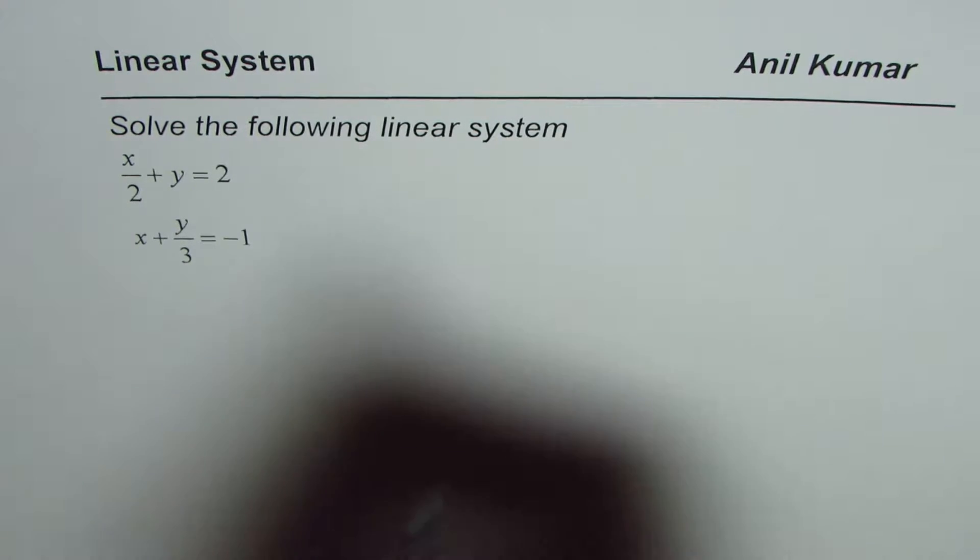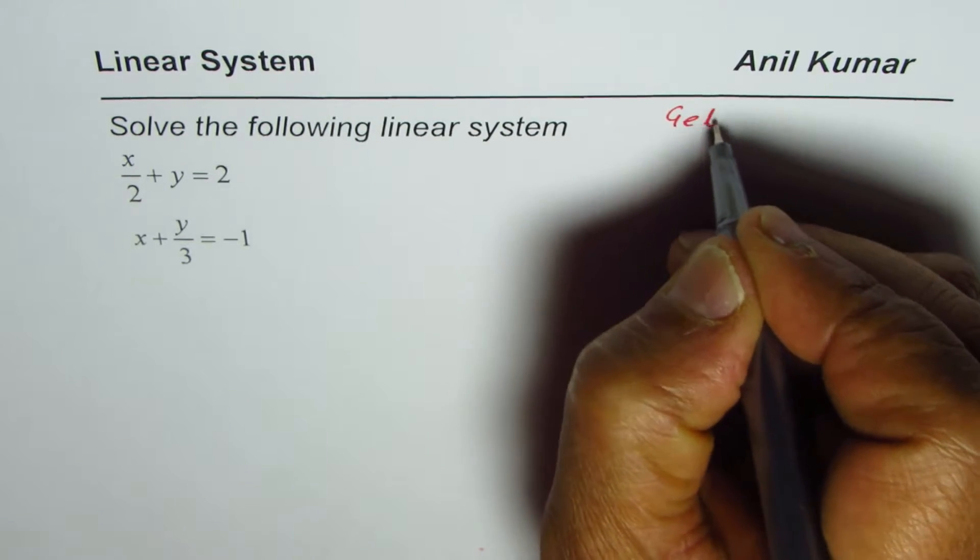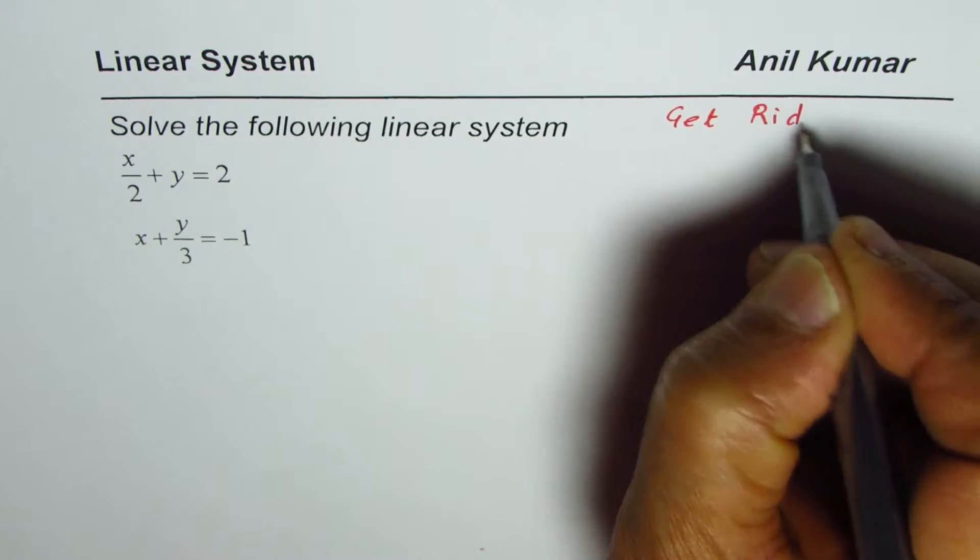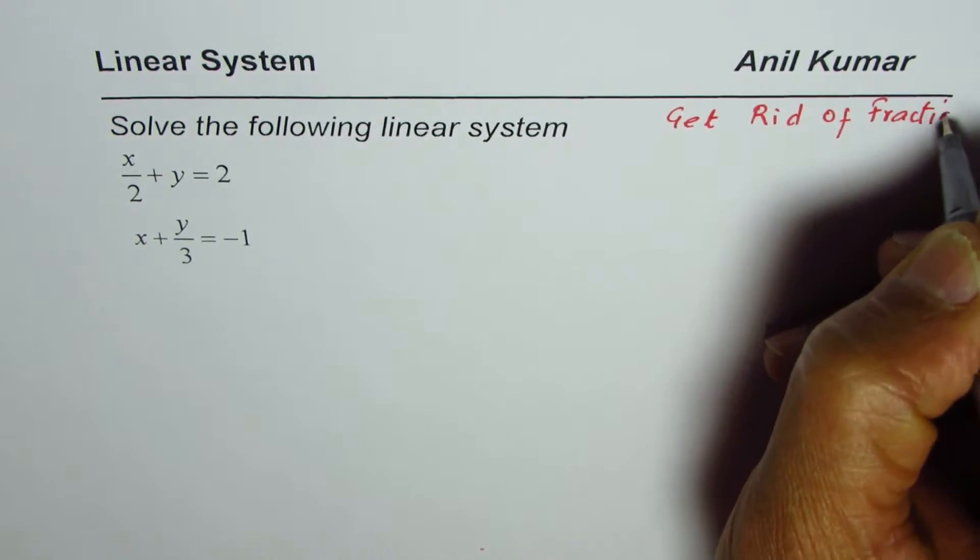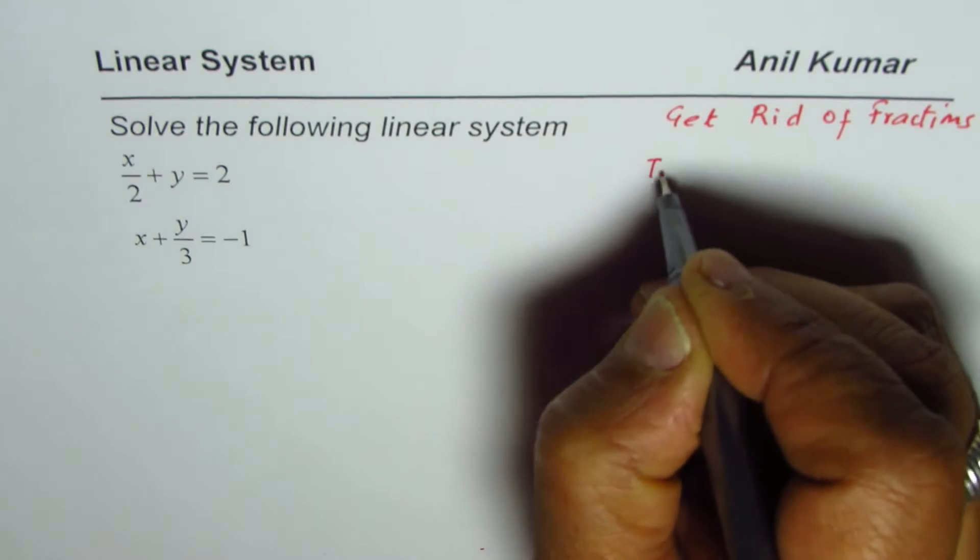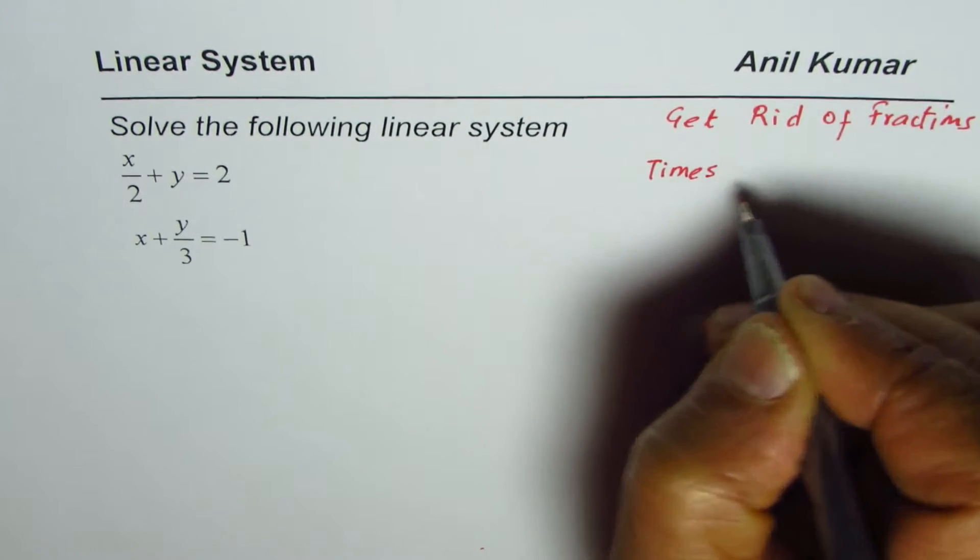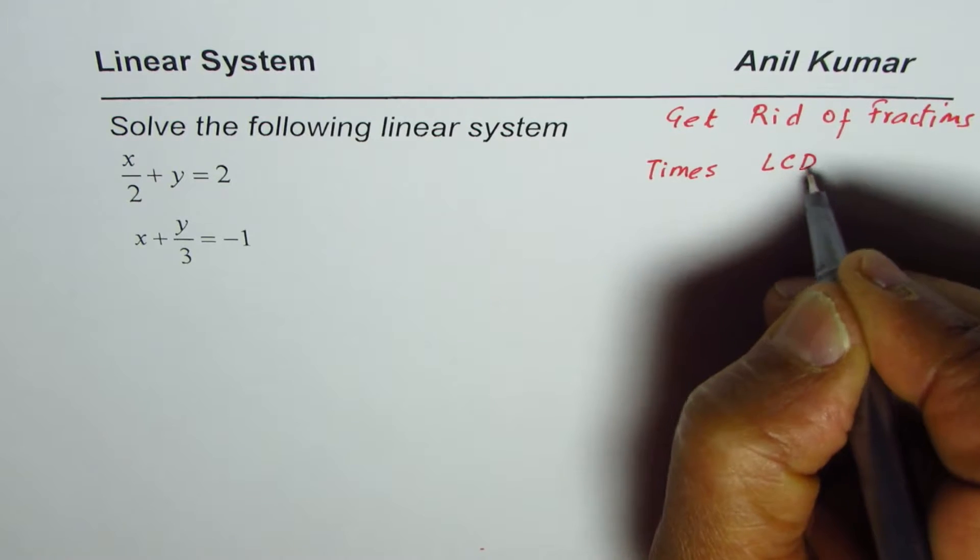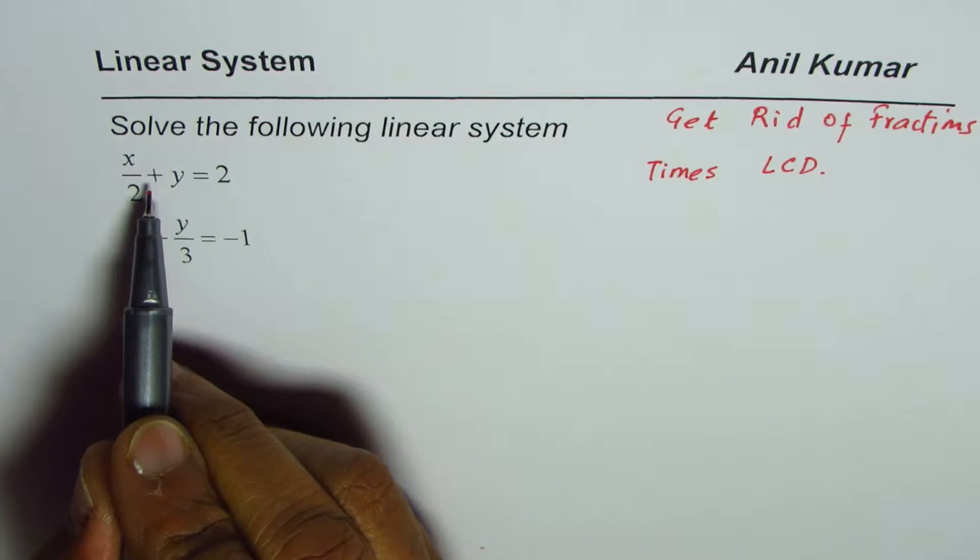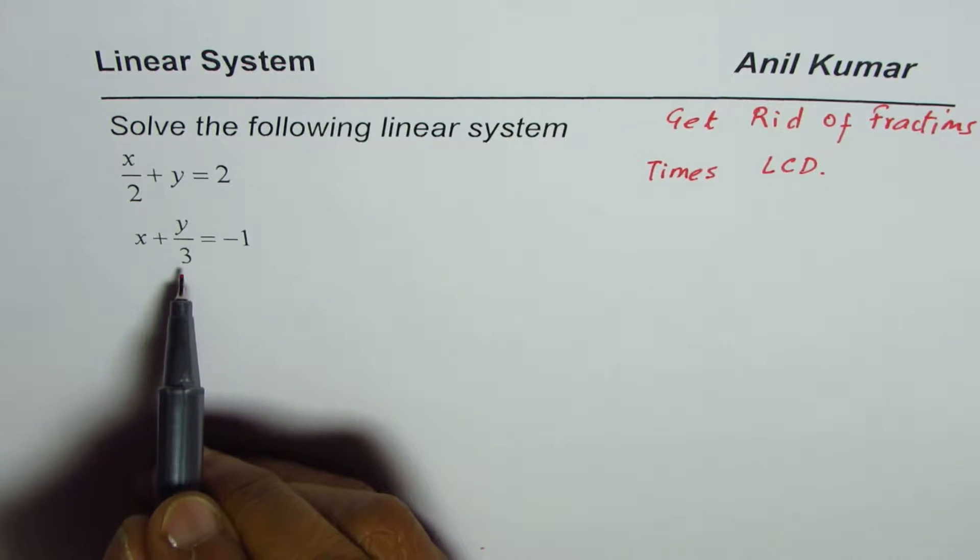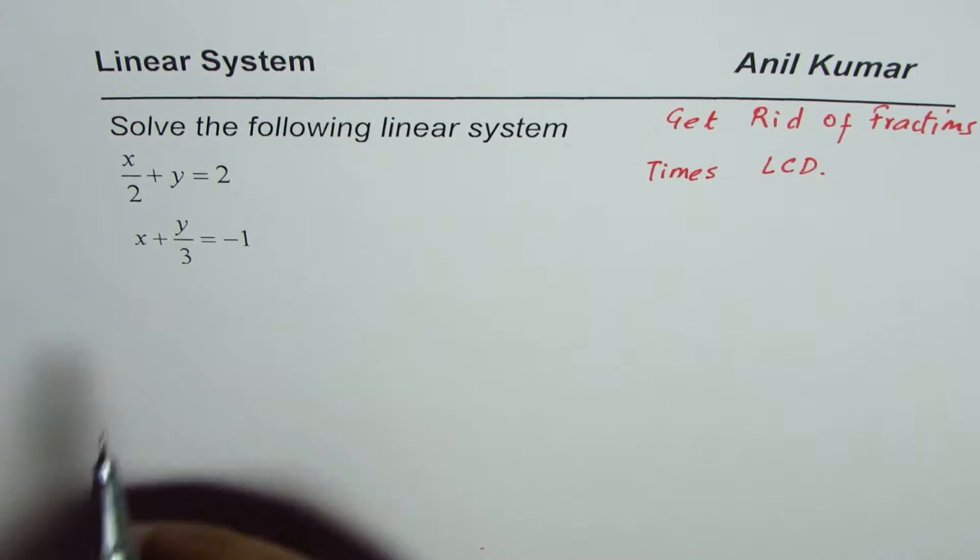is to get rid of fractions. So let me write down the strategy: get rid of fractions. How do we do so? We have to multiply by lowest common denominator. So for these equations, the lowest common denominator in the first equation is 2, in the second equation it is 3.